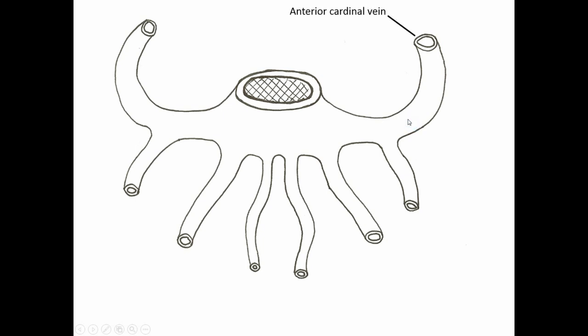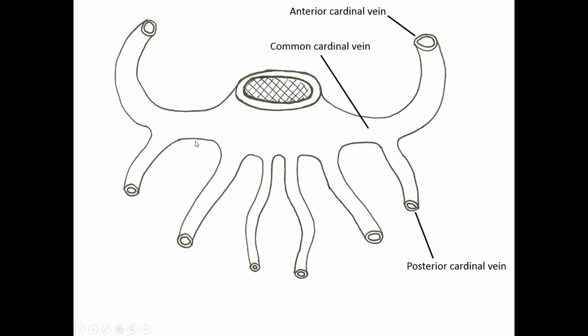You have an anterior cardinal vein which drains the area of the head or the cephalad portion of the embryo, and the posterior cardinal vein draining its inferior or caudad region. Both of these converge to form a common cardinal vein, and we've got all of this happening on the right and left. Both of these converge into a sac called the sinus venosus, which is a portion of the early embryologic heart.